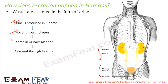The urine finally reaches the urinary bladder, where it is stored temporarily. When the feeling of urination comes — which is often termed as micturition — you feel like going to the washroom. That feeling signals that your bladder is full, and the urine is then released out through the urethral opening. That's how the process of excretion takes place.